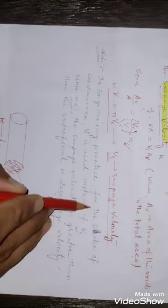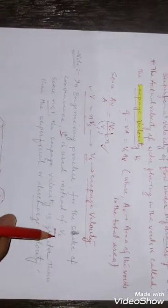So this is the difference between seepage velocity and superficial velocity. Remember, in engineering practice, for the sake of convenience, V means superficial velocity is used instead of Vs, that is seepage velocity.